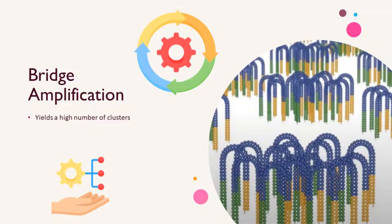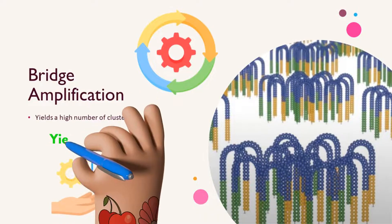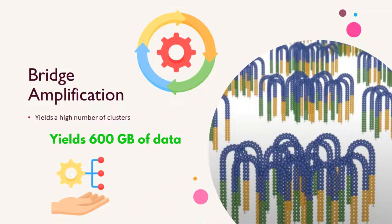Bridge amplification yields a high number of clusters within the flow cell for good loading. As a result, a full run of two flow cell sequencing in parallel may yield approximately 600 gigabytes of data.